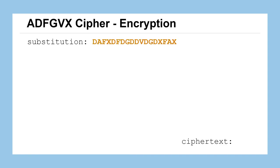So now we've got this intermediate message — this is not the ciphertext; we can call it the substitution text. We're going to have to do a little bit of shuffling around of these characters to get the diffusion characteristic and also the fractionation we want, and it'll help us create the ciphertext.